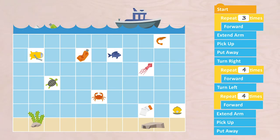Well, did you do it? I have solved it this way. Start, repeat three times forward, extend arm, pick up, put away, turn right, repeat four times forward, turn left, repeat four times forward, extend arm, pick up, put away. Isn't that simple? You expand your algorithm with a number of new instructions.